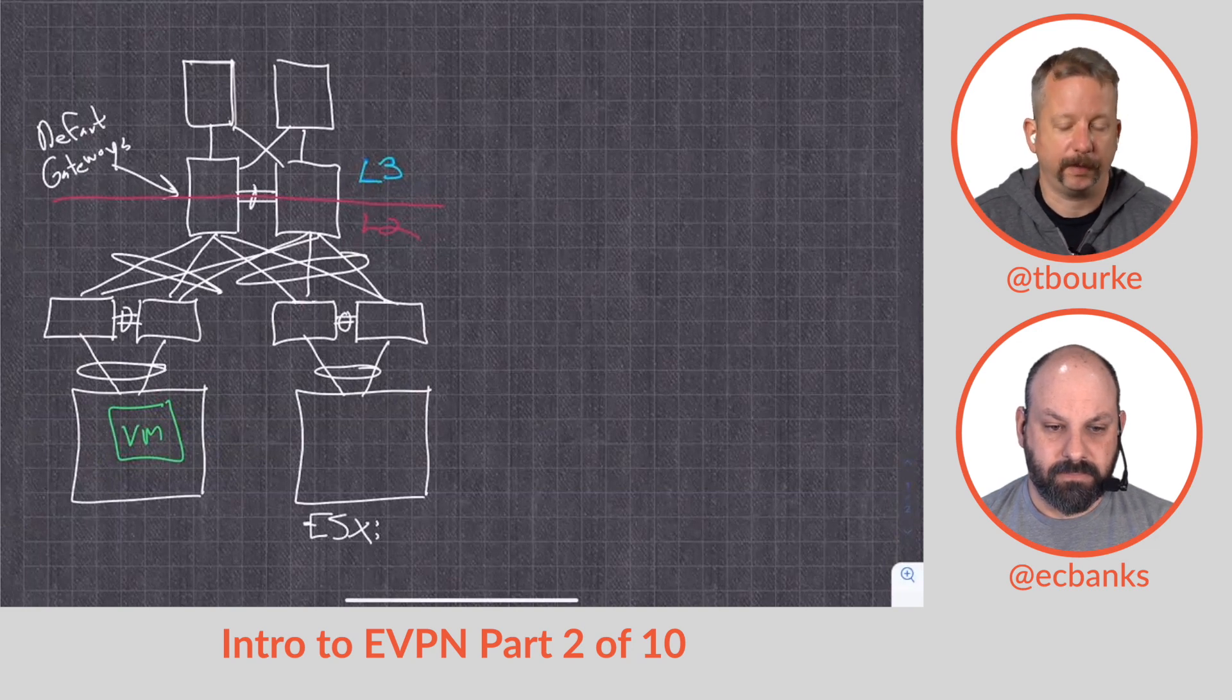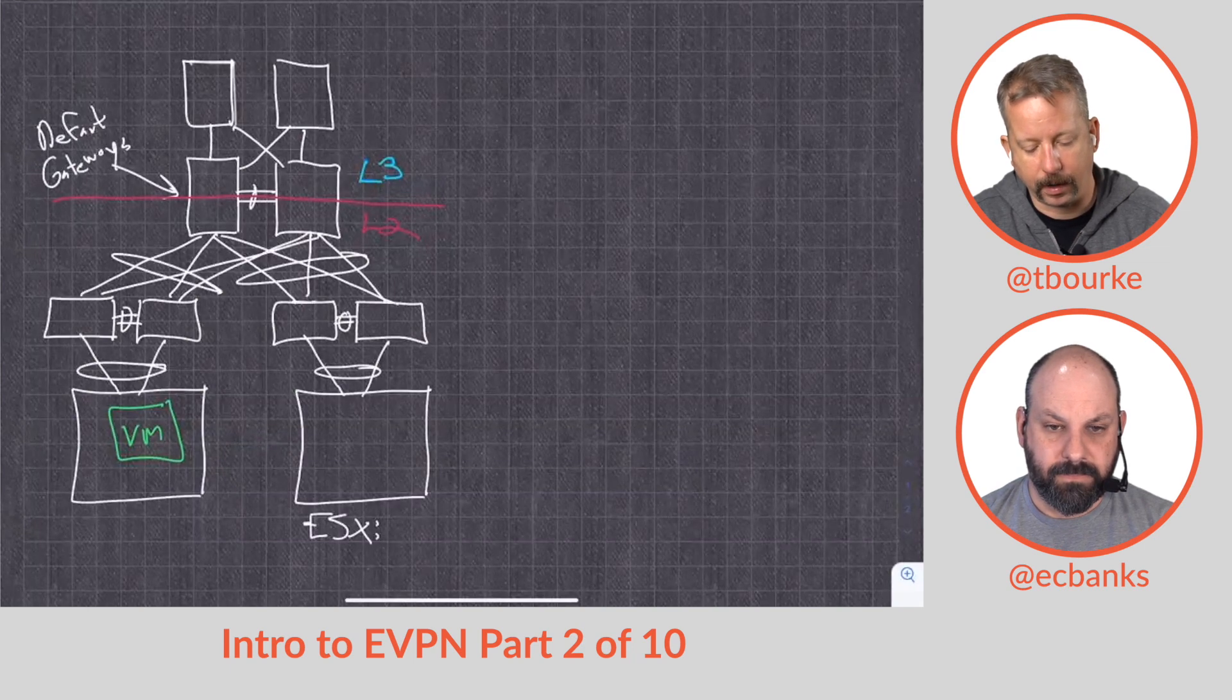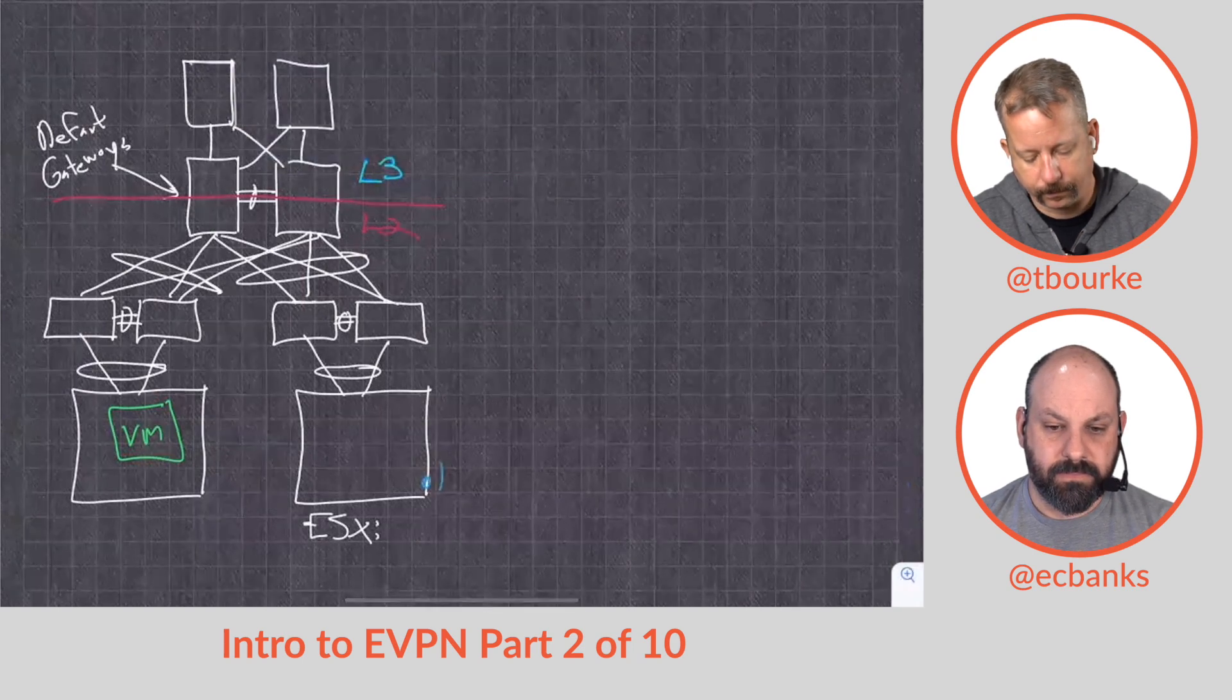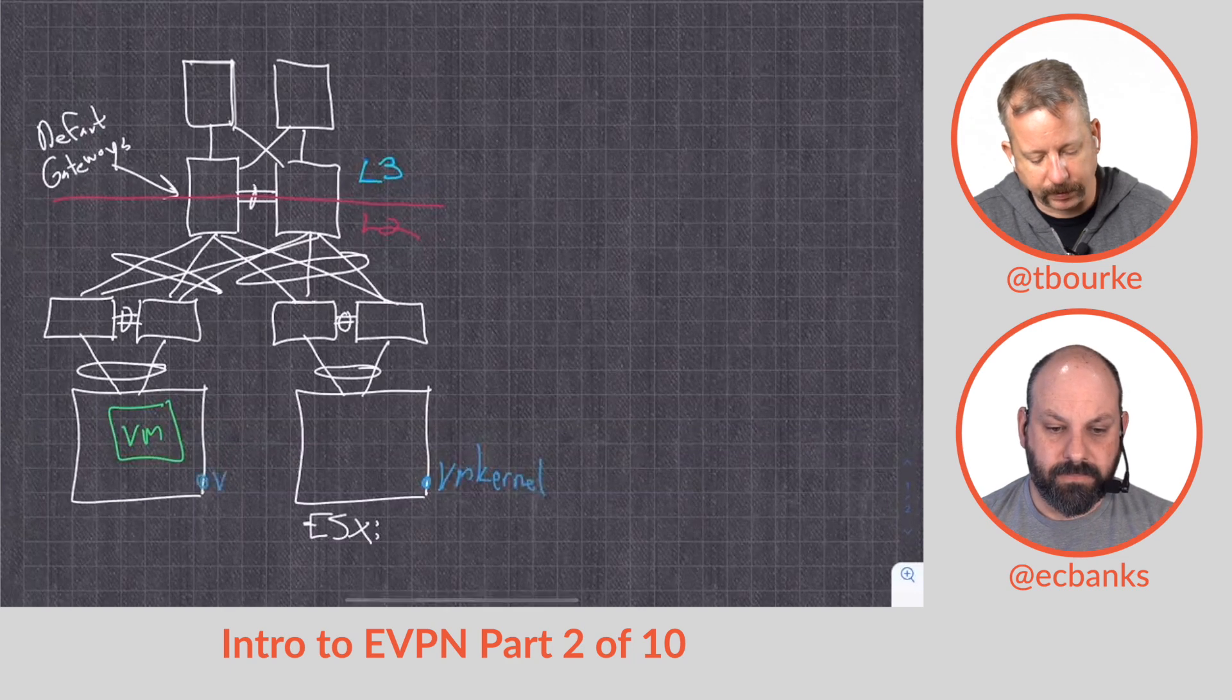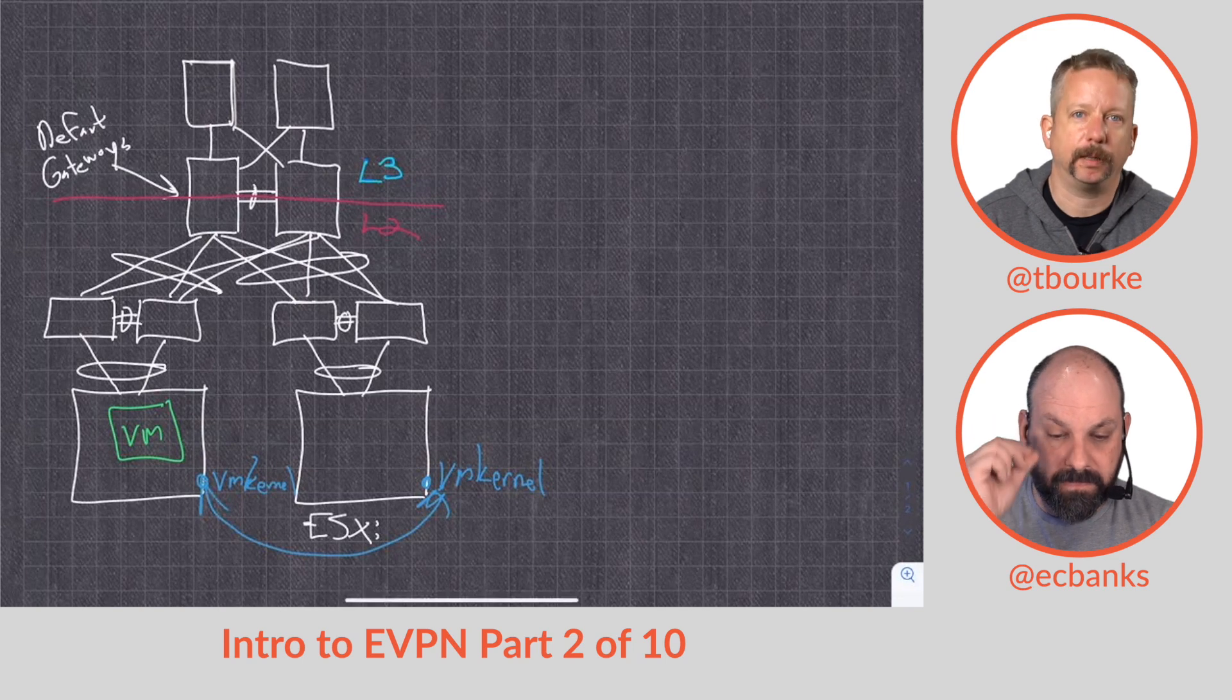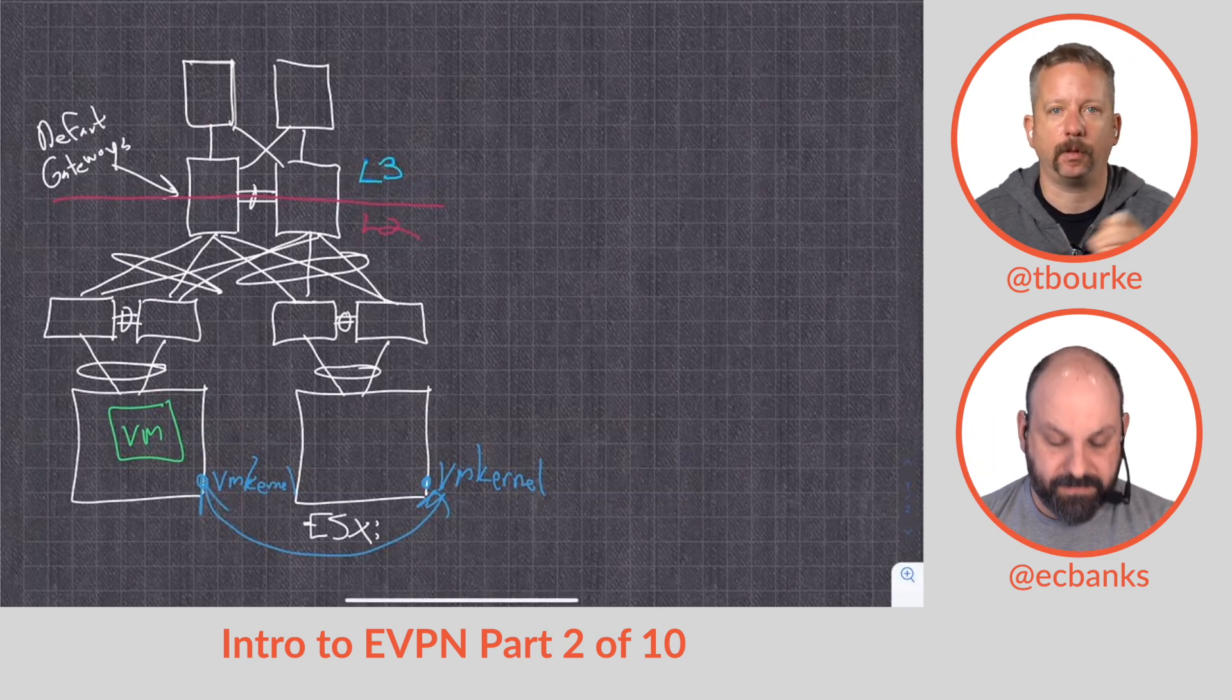Each of these hypervisors is going to have an IP interface called a VM kernel interface, and those IP addresses used to have to be on the same subnet. That's where the actual data would go back and forth for that actual VMotion. That is no longer needs to be layer 2 adjacent, but we still have to have the same layer 2 segments available on all hypervisors to support that VM.